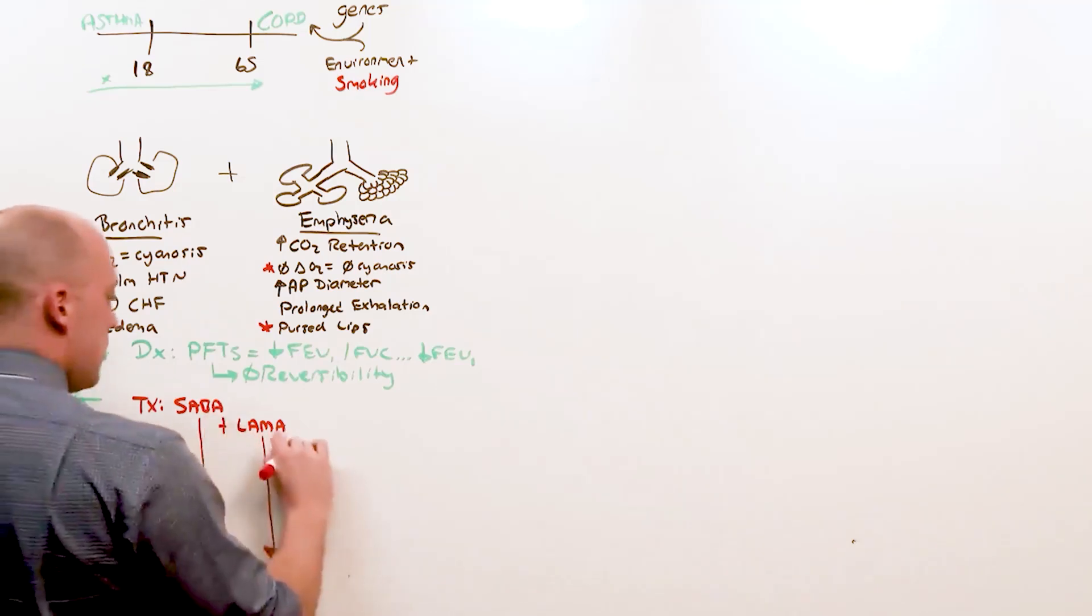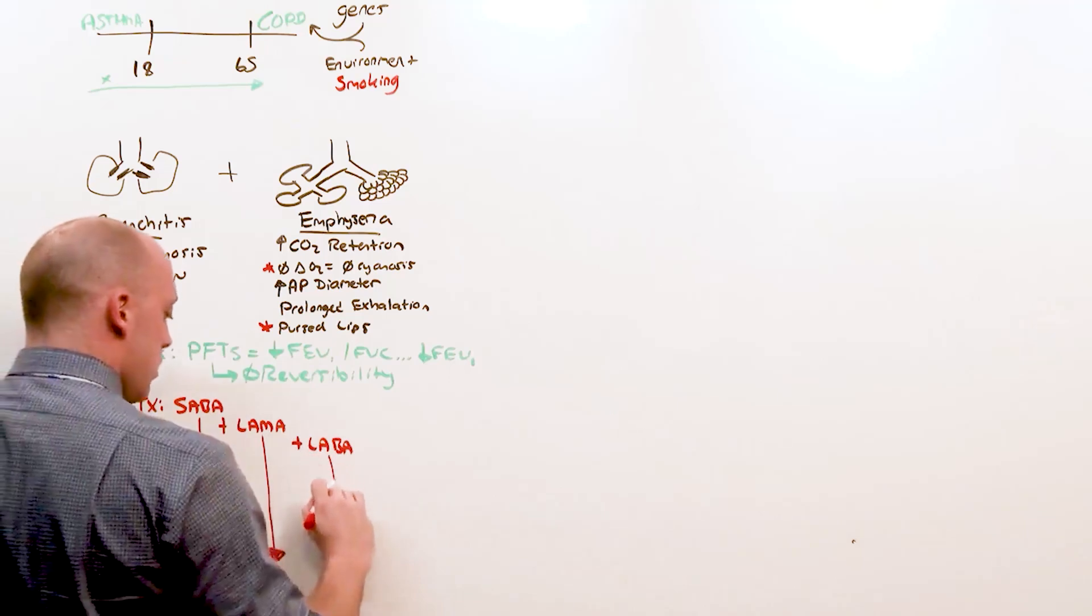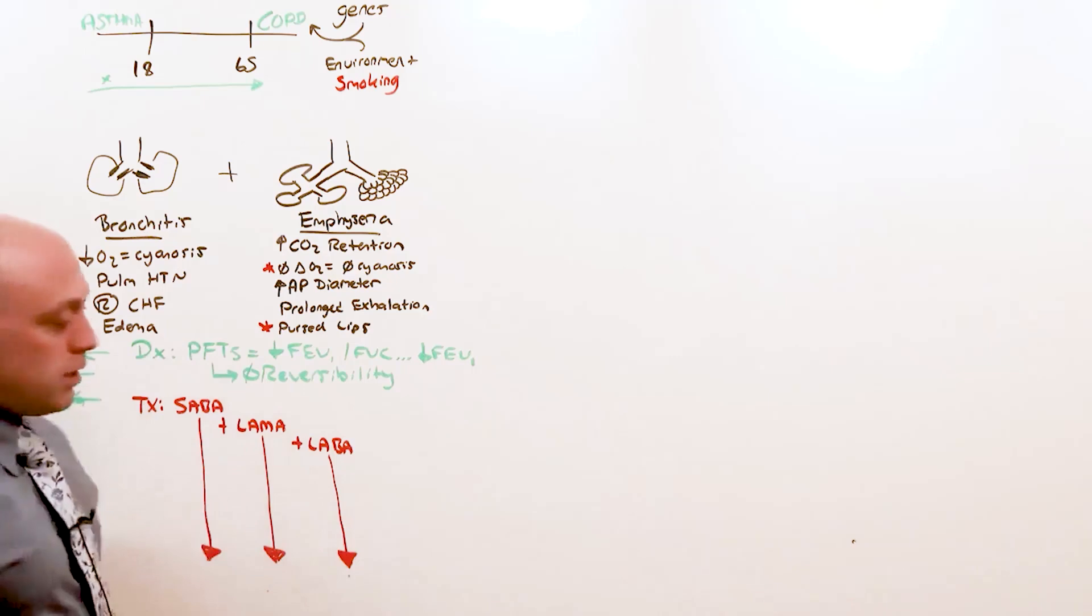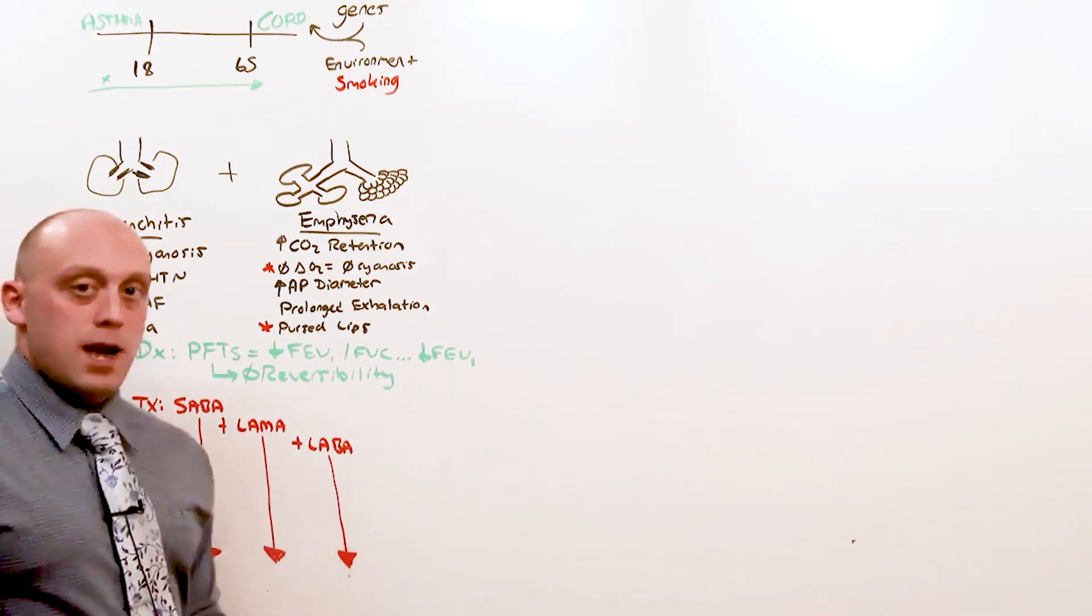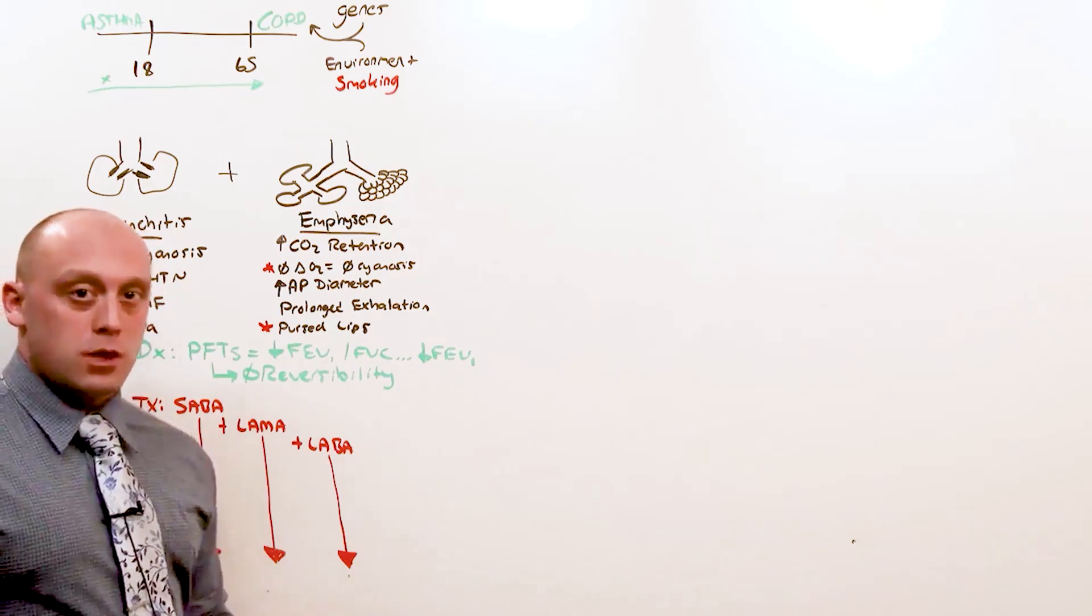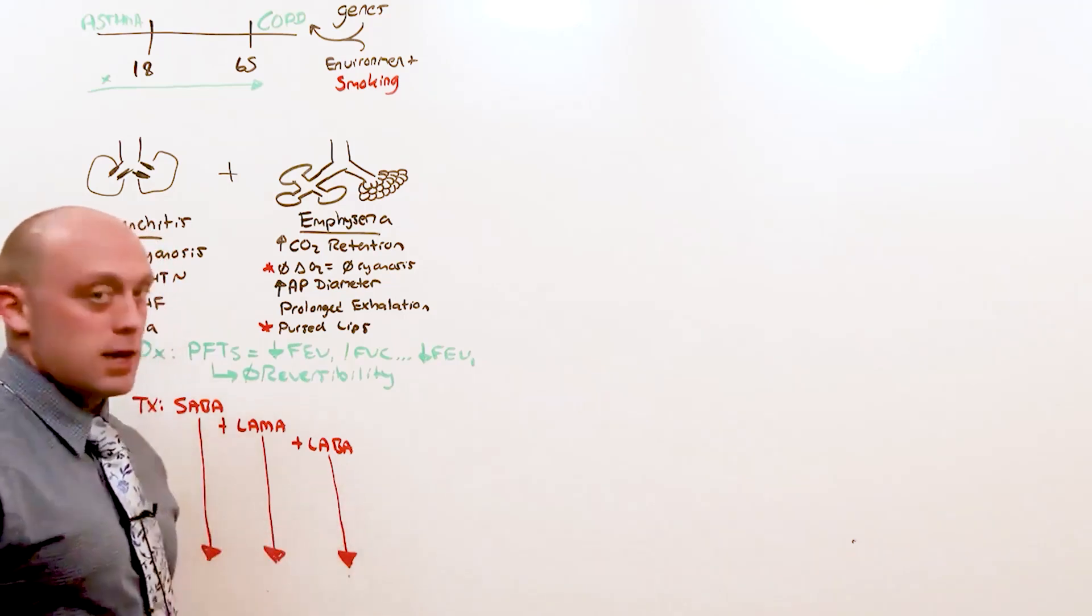Then you add a long-acting beta agonist, anything that ends in -olol. Notice what we did here. If you remember from asthma, if you put someone on a long-acting beta agonist, they die. You must include inhaled corticosteroids first in asthma before adding a long-acting beta agonist.